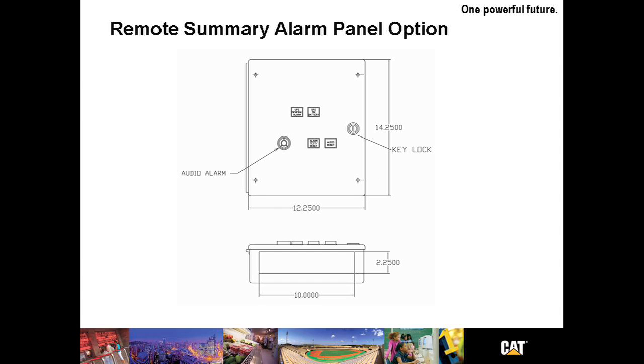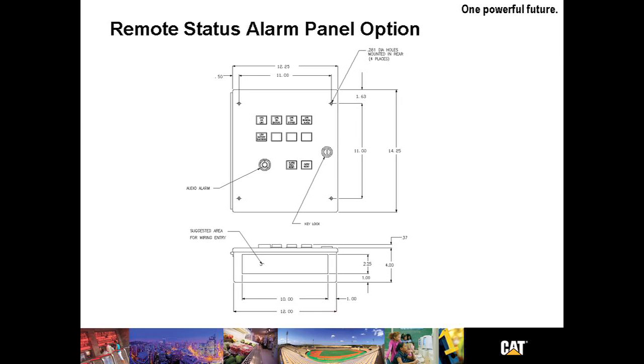The remote summary alarm panel option provides for a panel with remote notification of summary alarms and UPS on battery. The panel also includes buttons for lamp tests and alarm resets. Of course, we can design a panel to meet your specific needs if other remote summaries are required. The remote status alarm panel option provides for a panel with alarm notifications of alarms with single or parallel UPS.